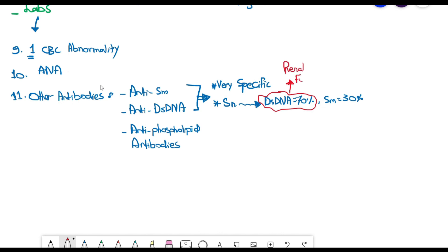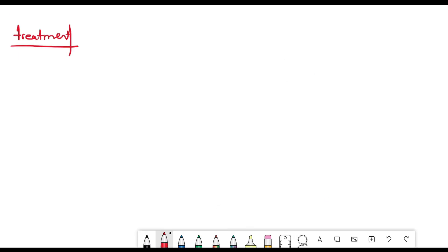When it comes to antiphospholipid antibodies we are talking about anti-cardiolipin antibodies as well as lupus anticoagulant. So you need to rule out any other disease that can explain the patient symptoms and you need four out of this 11 then you can diagnose SLE. Now let's talk about SLE treatment.